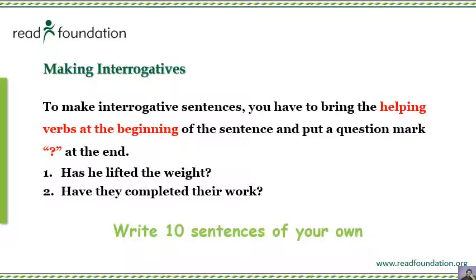For interrogative sentences, you take the helping verb and put it at the beginning of the sentence. Then write the rest of the sentence, and at the end add a question mark. For example: 'Has he lifted the weight?' — the helping verb 'has' moves to the front. Compare with the positive: 'He has lifted the weight.'